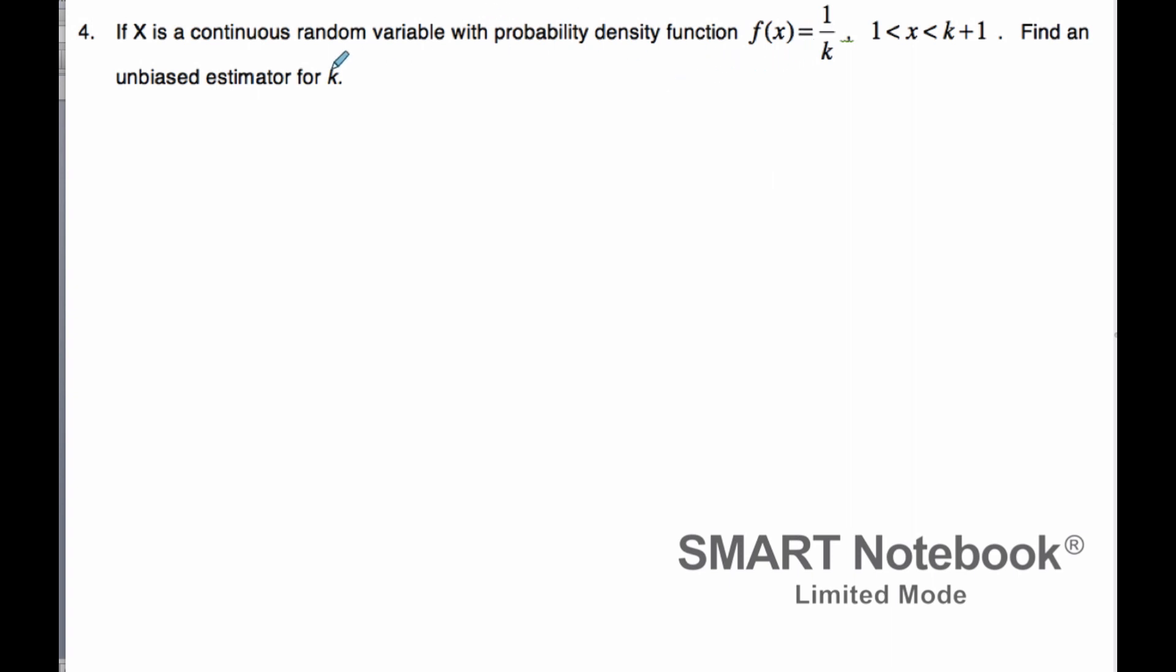If I want to find an unbiased estimator for k, I need to know what the expected value is. If I do the expected value of some statistic, then I need to get k when I'm done.